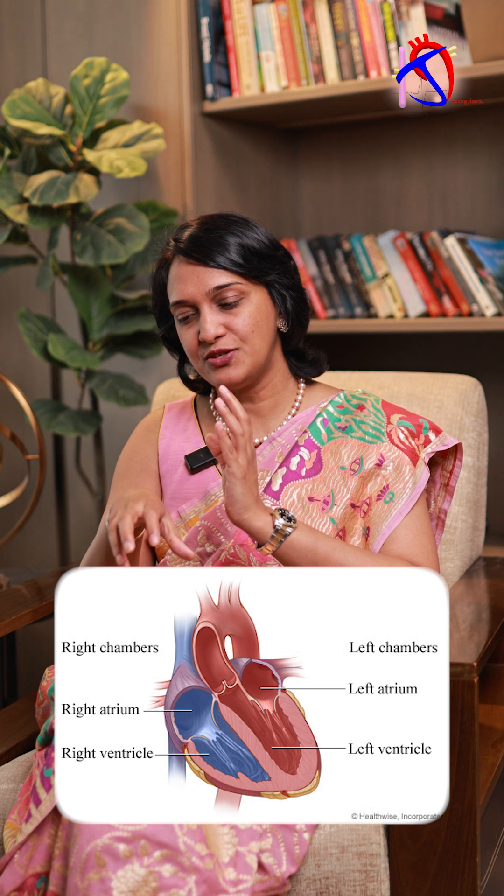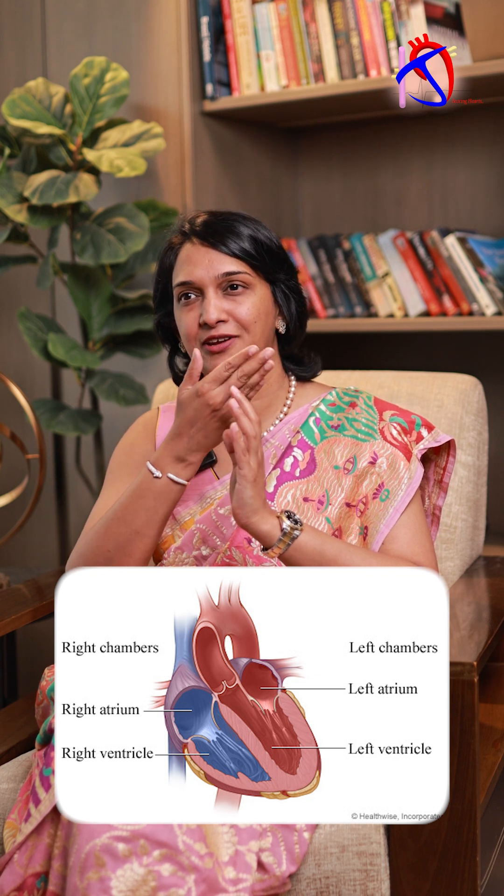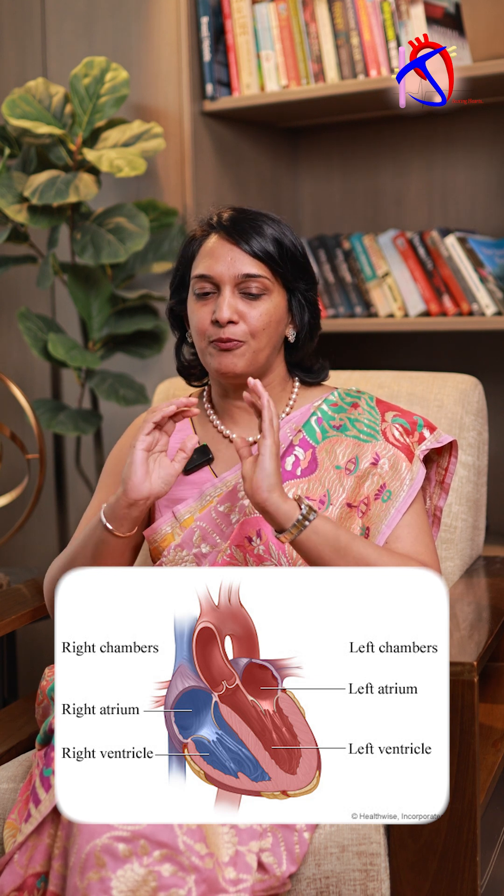From the right ventricle, the lower chamber, it goes to the pulmonary arteries. From the pulmonary arteries, it goes to both the lungs, where it gets oxygenated.